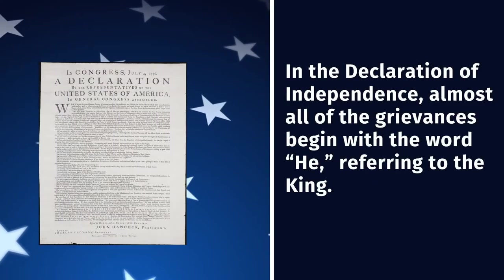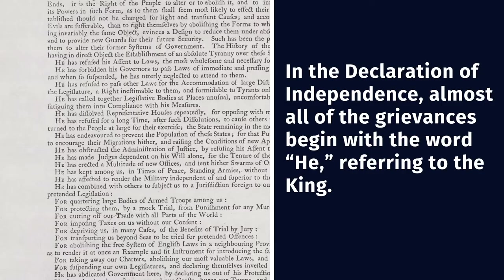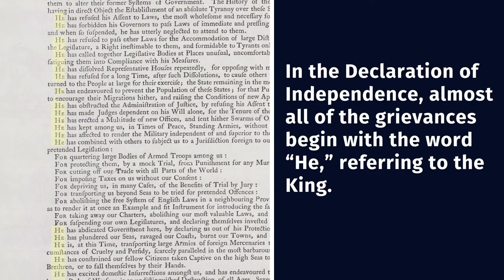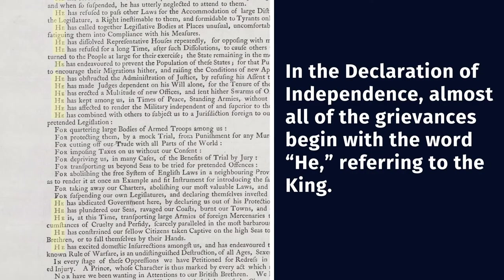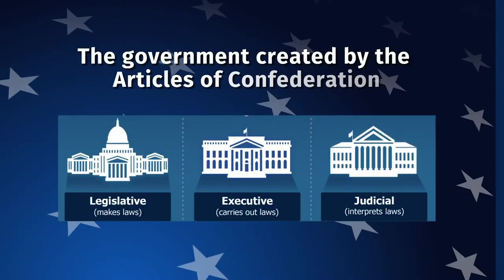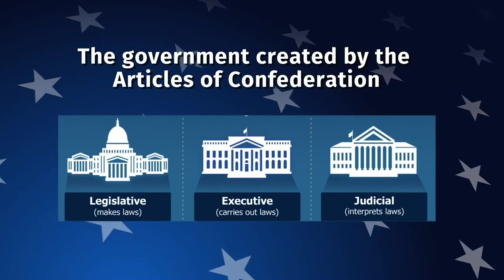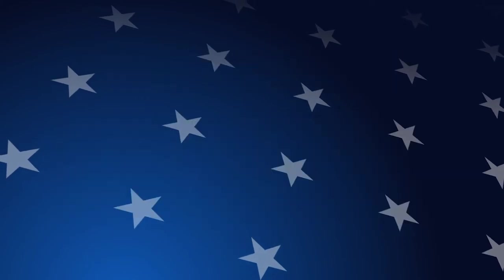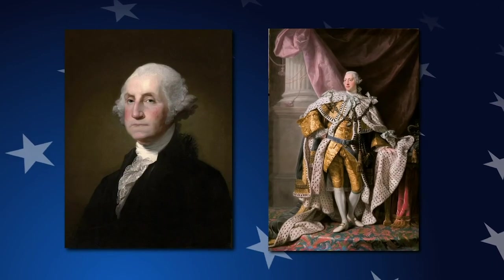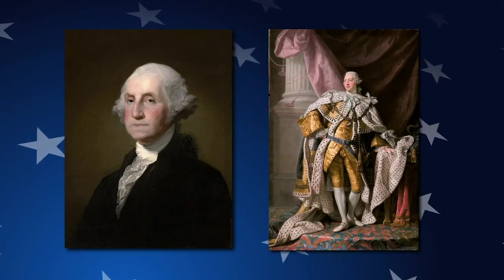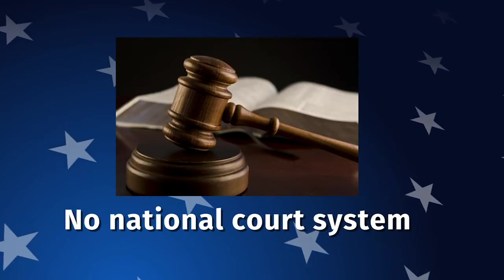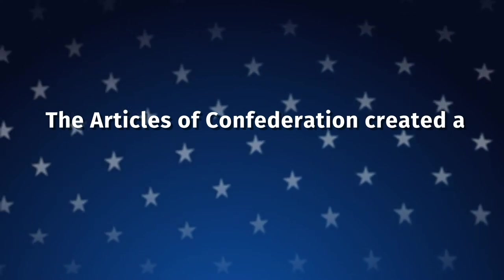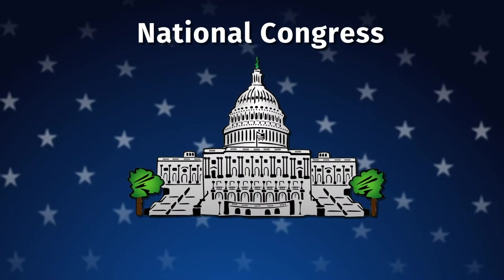Remember, in the Declaration, almost all the grievances begin with the word 'he,' referring to the king. Because of this, the government created by the Articles of Confederation had no executive branch — nothing like a president or a king to oversee the government. It also had no national court system. The Articles of Confederation only created a national Congress.